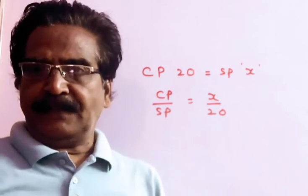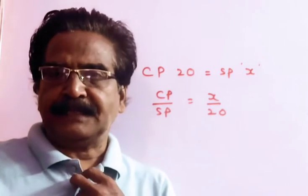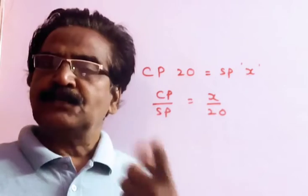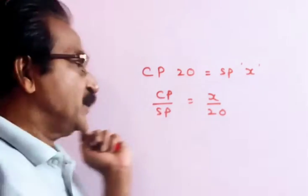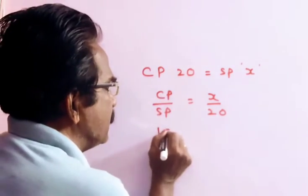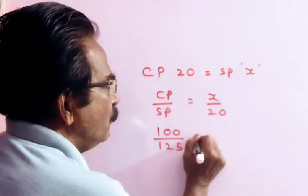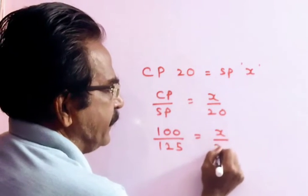Profit is 25%. What does this mean? If cost price is 100, selling price is 125. So if cost price is 100, selling price is 125, this equals X by 20.